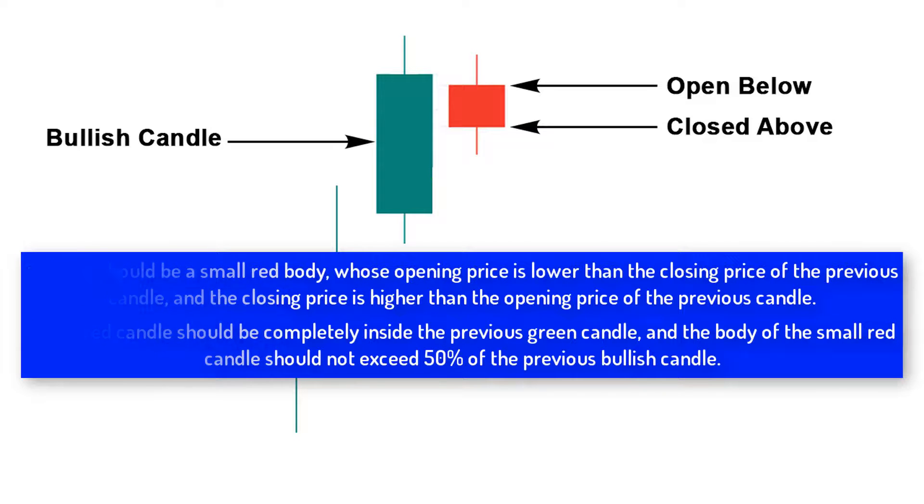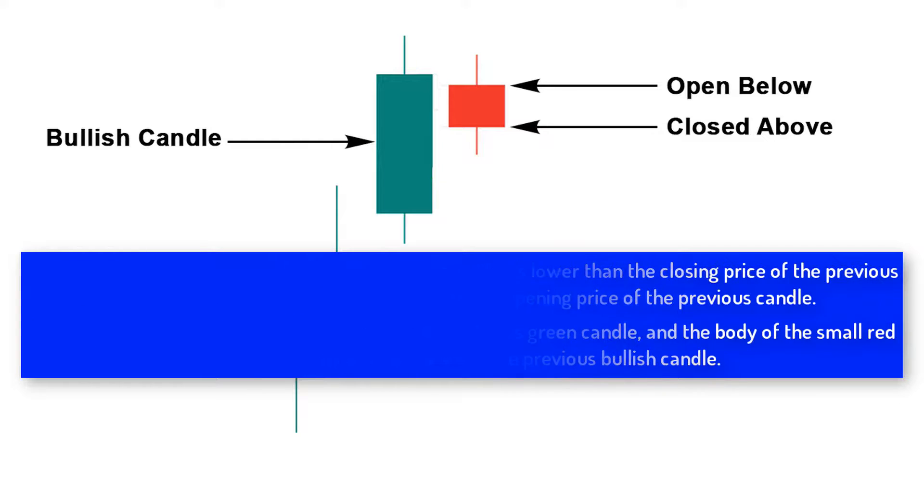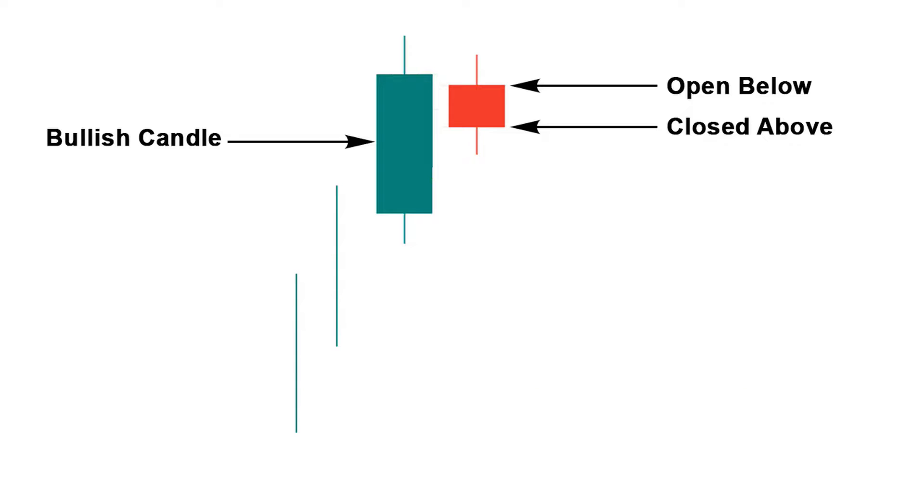Now we will see when this signal should be used. We should only sell when a bearish harami is formed in the resistance or overbought zone, and wait for the next candle to cross the low of the red candle.